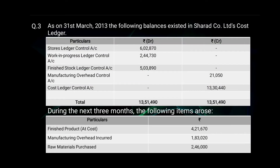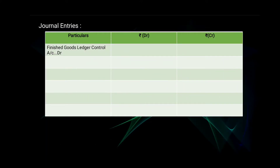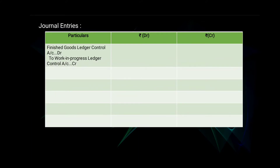The first expense is finished product at cost; the amount is given as 4 lakh 21,670. The journal entry will be: Finished Goods Ledger Control Account debit, to Work in Progress Ledger Control Account — amount 4 lakh 21,670 on the debit and on the credit side.